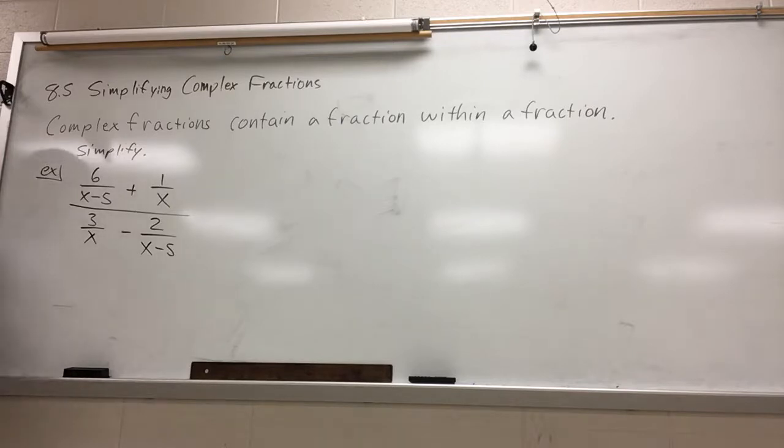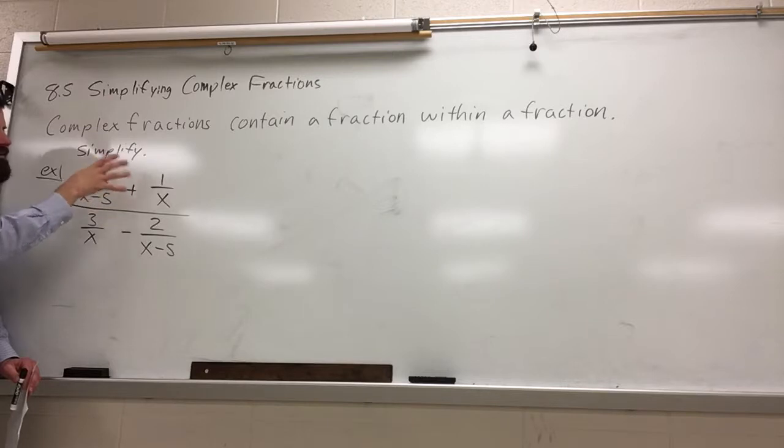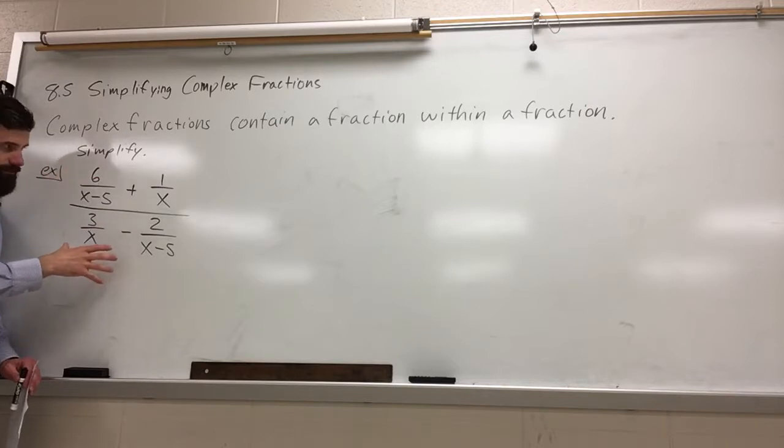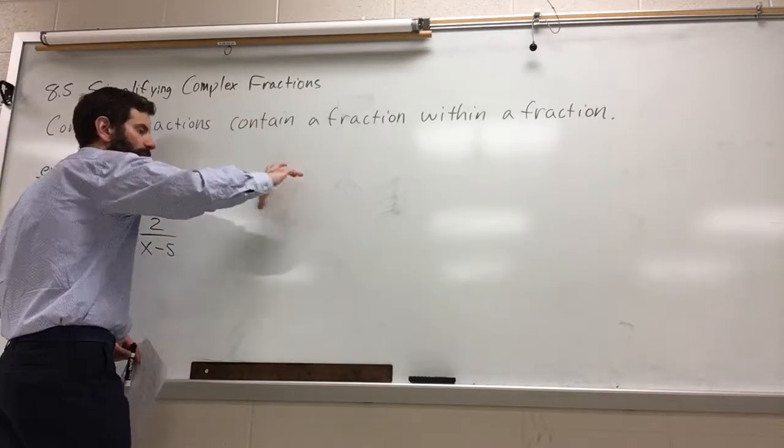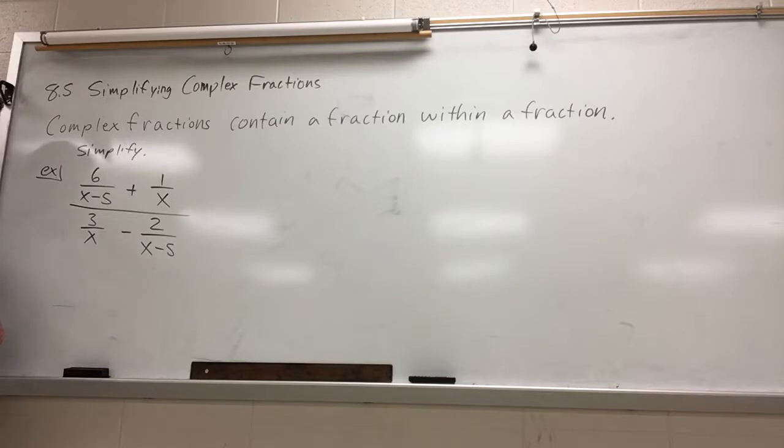But this is all divided by 3 over x minus 2 over x minus 5. One way to do this would be to simplify your numerator, get a common denominator, simplify your denominator, and then rewrite this as multiplying by the reciprocal. That works pretty well on a lot of problems.